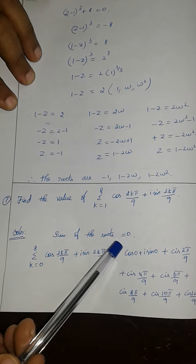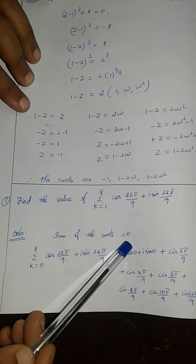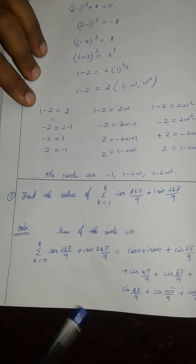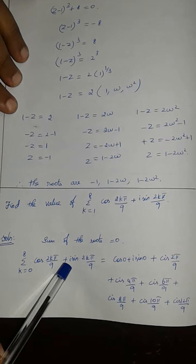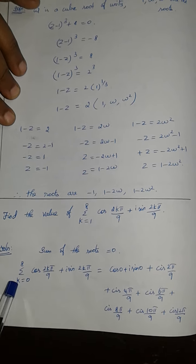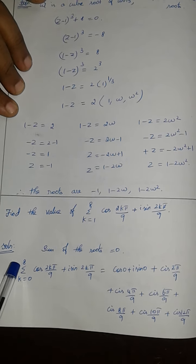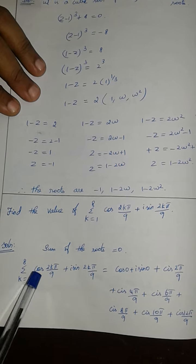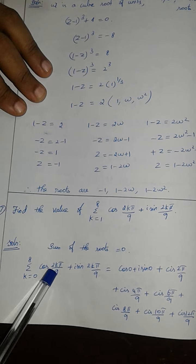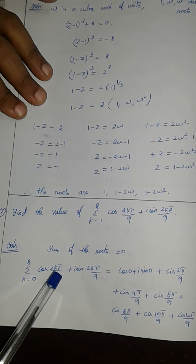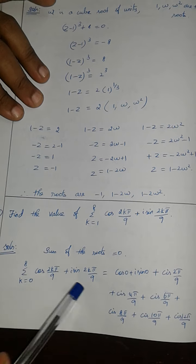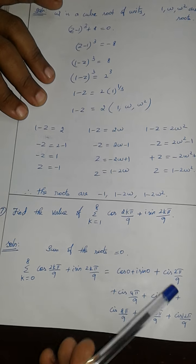Why do I know this? The sum of the roots is equal to 0. I know k is equal to 0 to 8: cos(2kπ/9) plus i·sin(2kπ/9). So this covers all roots from 0 to 8. If you apply k=0, cos(0) plus i·sin(0) is equal to 1. Applying k=1 gives cos(2π/9) plus i·sin(2π/9), and so on up to k=8.